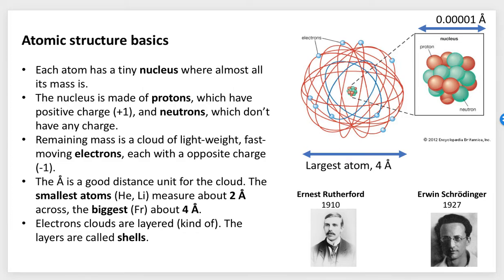The rest of the mass is this cloud of lightweight, fast-moving electrons, and each electron has the opposite charge to a proton, so it has a minus one charge. The angstrom is a good distance unit for that cloud.